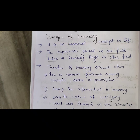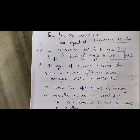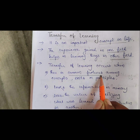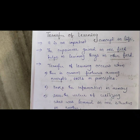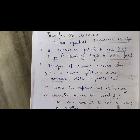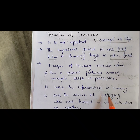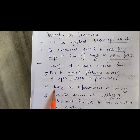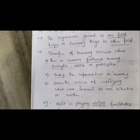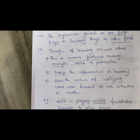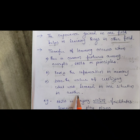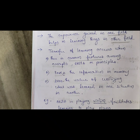Transfer of learning occurs when there are common features among the concepts. Common features must be present for transfer to happen, otherwise it will not transfer. It links the information in memory, and shows the value of utilizing what was learned in one situation in another situation.